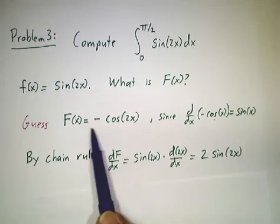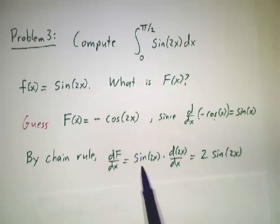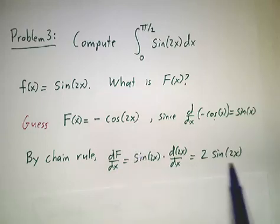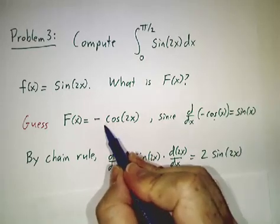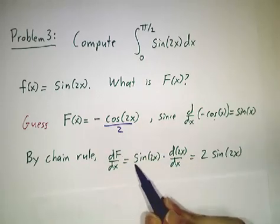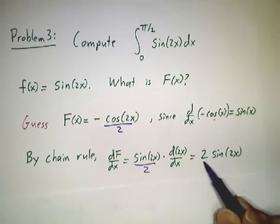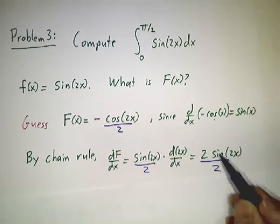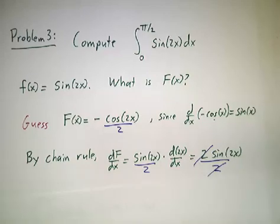By the chain rule, the derivative of this function is sin(2x) times the derivative of 2x, so that's 2sin(2x). Can we adjust our guess to make things work? Sure. If we guess -½cos(2x), then we get half of that, and that's what we want.